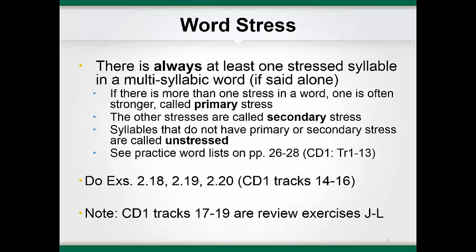The practice word lists for stress in your textbook give examples of words with primary and secondary stress on different syllables. There are several CD tracks associated with these lists. It is important to listen to them to get an idea of what to listen for when different syllables are stressed. Pause the recording here and listen to the practice word lists. After listening, do exercises 2.18, 2.19, and 2.20 to check your understanding. You can check your answers in the back of the book. If you don't get the right answers, review the reading or listen again, or post a question on the discussion board. You should also try review exercises J through L at the end of the chapter, listening to the appropriate tracks on the CDs.